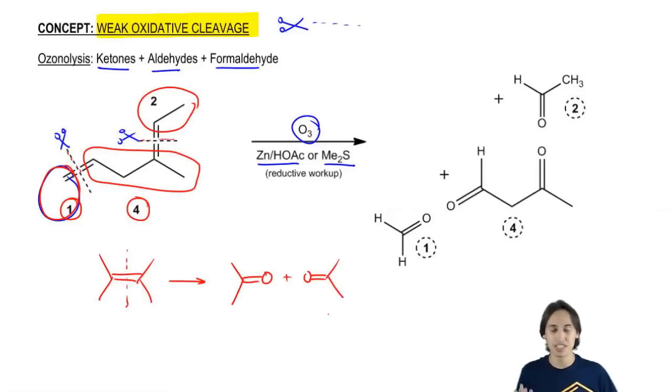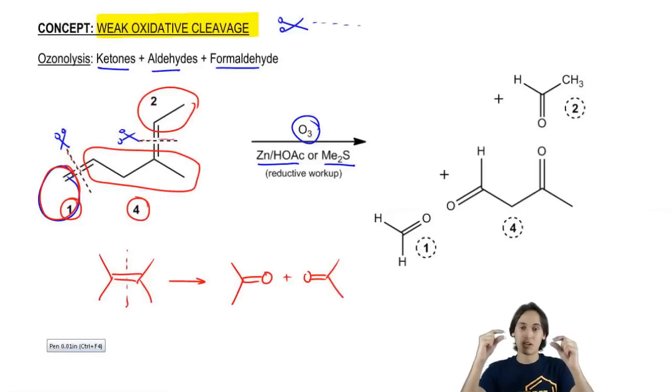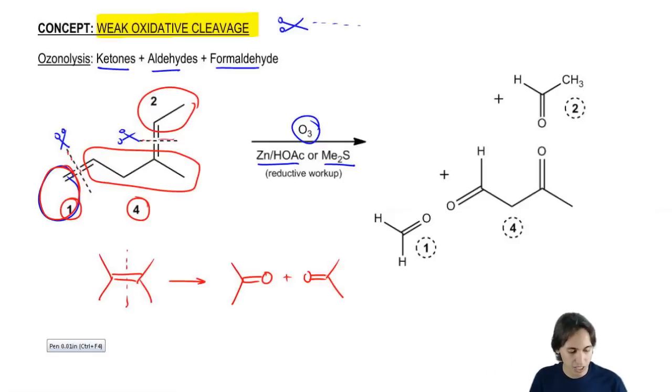Notice that what I'm doing is all I'm really doing is I'm keeping the double bonds there, but I'm adding oxygens on each end. That's all that's really happening. I'm just adding an oxygen here, an oxygen there, and then I'm splitting them apart. And that's exactly what's happening with all of these different cuts.